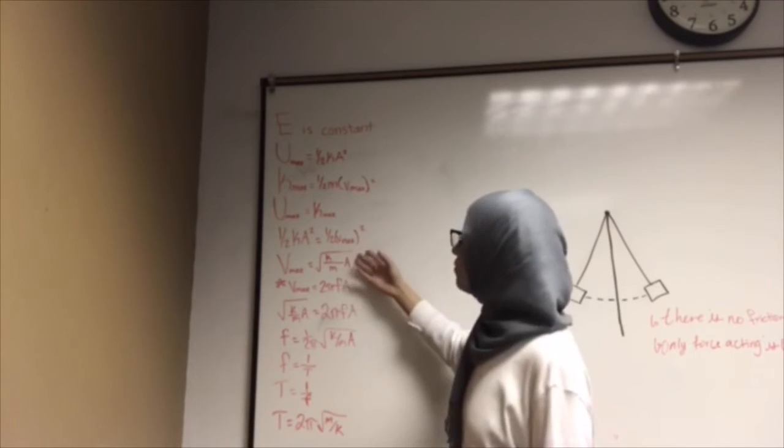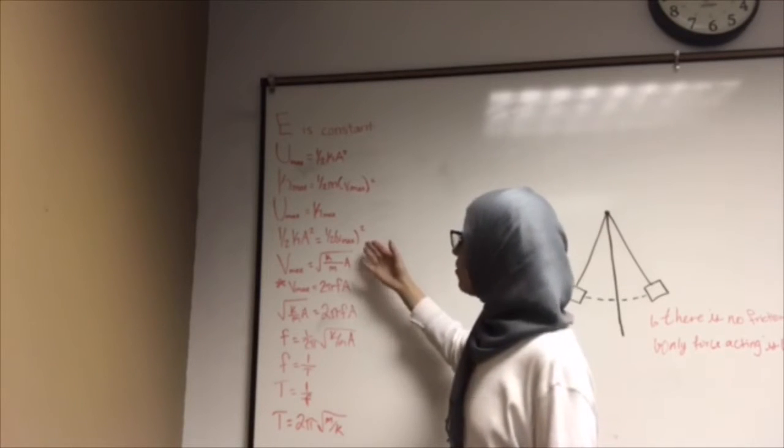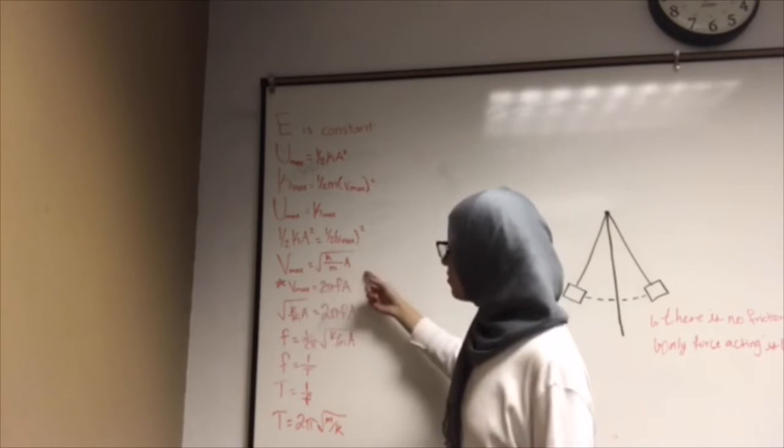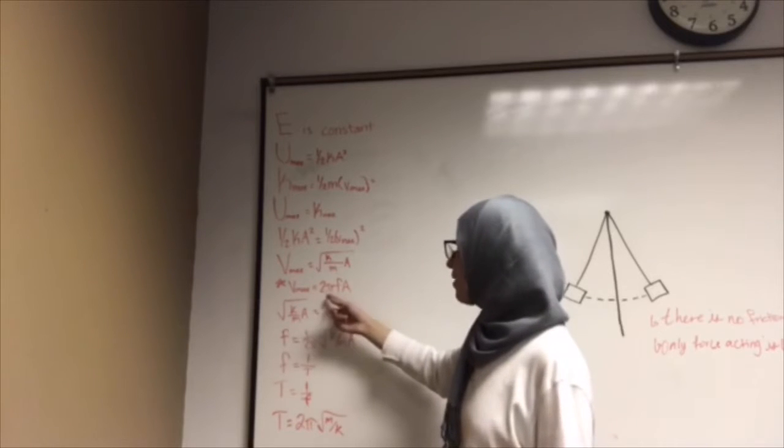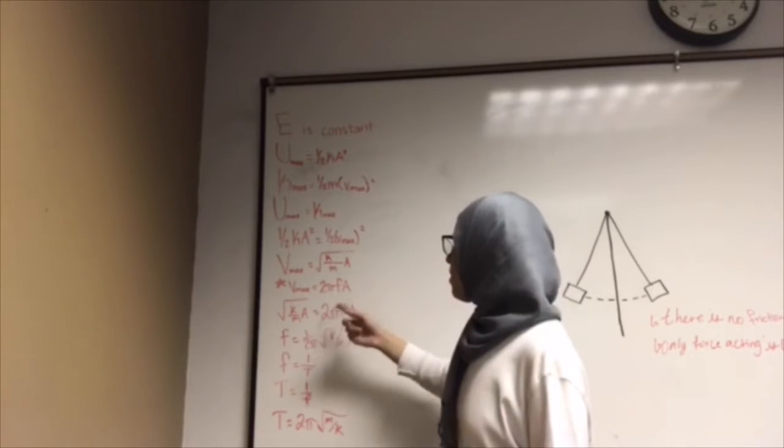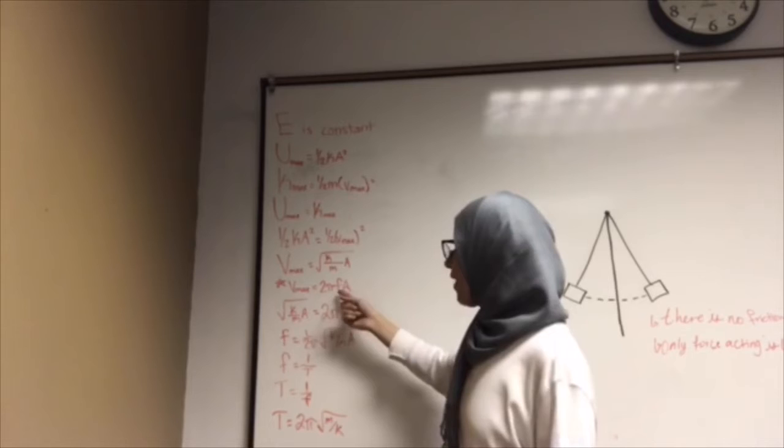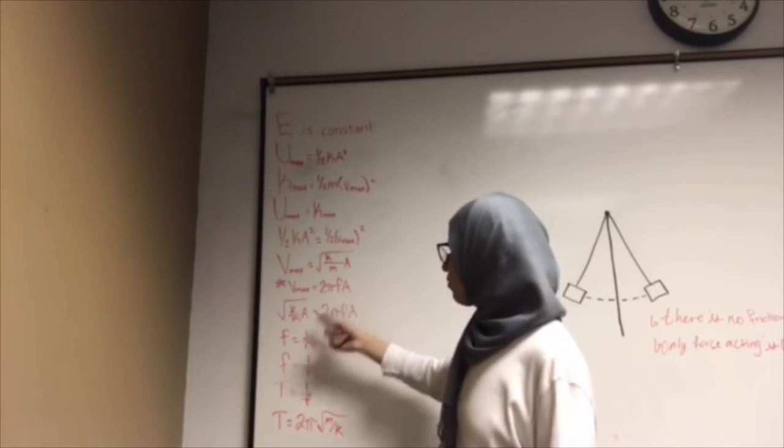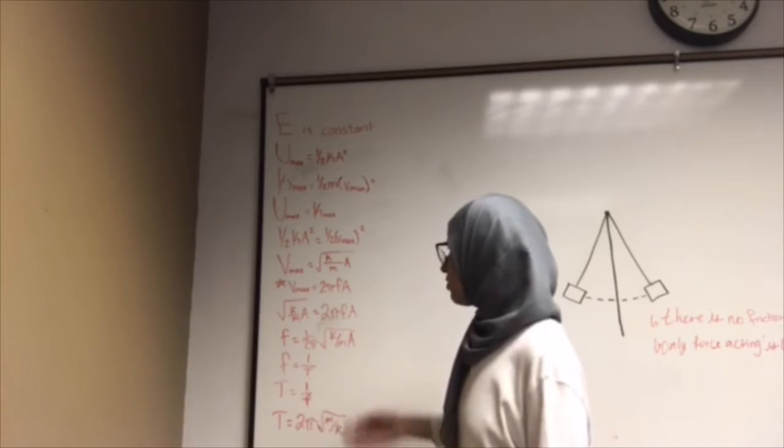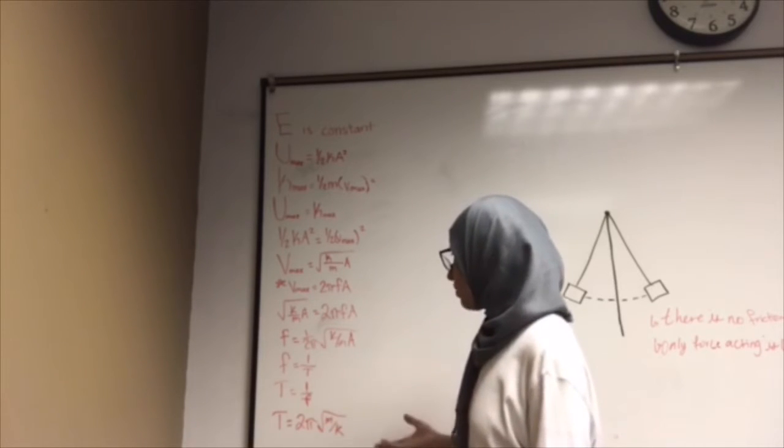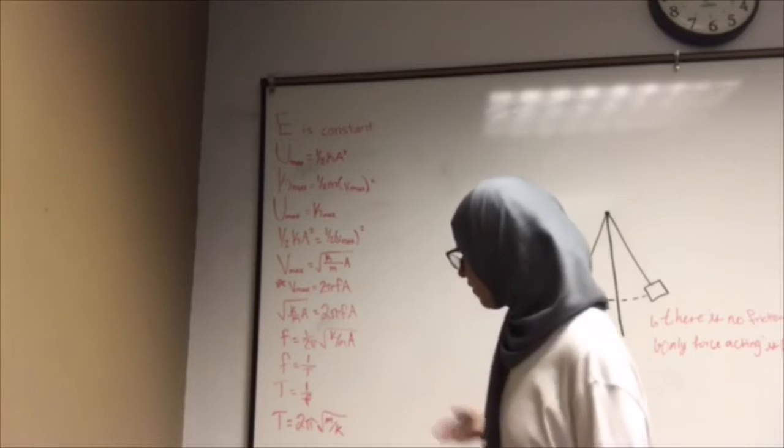When we solve for V max, we're going to get this expression, and we know from another equation that V max equals 2πFA. If we solve for F, which is frequency, we're going to get the following equation. Now frequency is going to be the inverse of T, which is the period. T is going to be also the inverse of F.